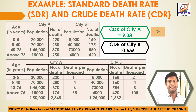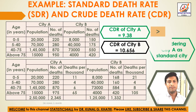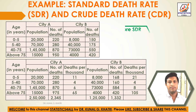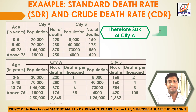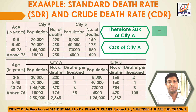Comparing: CDR of city A is 9.38 and CDR of city B is 10.656. Since CDR of city B is greater than CDR of city A, we consider city A as the standard city. Therefore, SDR of city A equals CDR of city A, which is 9.38.